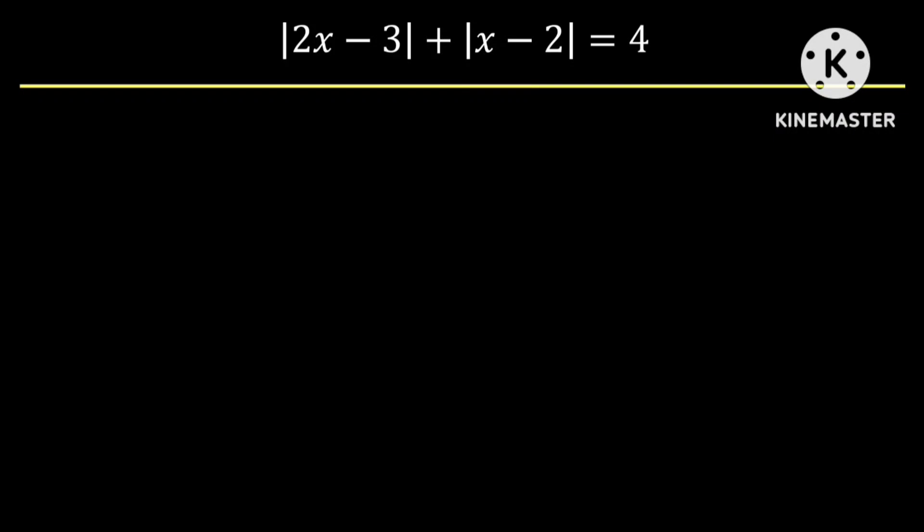Hello guys, you are once more welcome to this channel. Today we have another interesting question. We are given that the absolute value of 2x minus 3 plus the absolute value of x minus 2 is equal to 4, and we need to find the values of x that satisfy this equation.